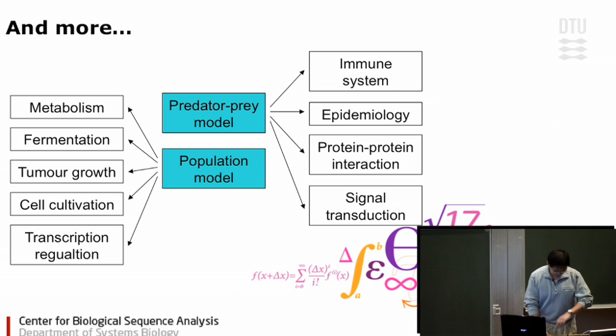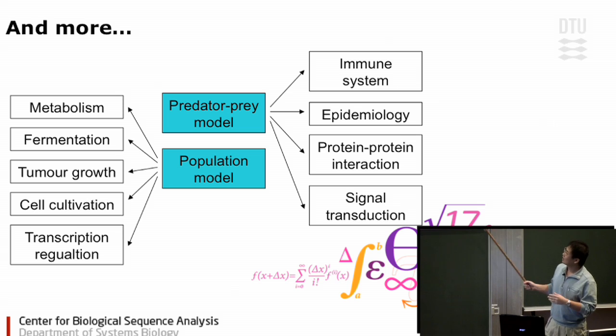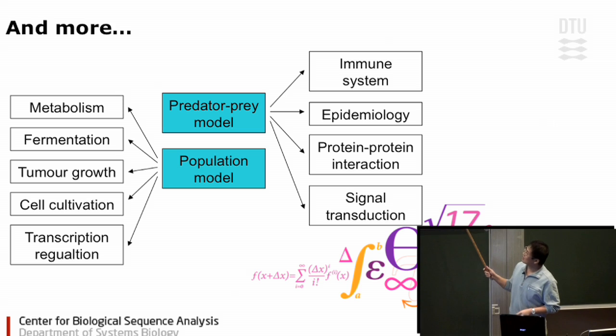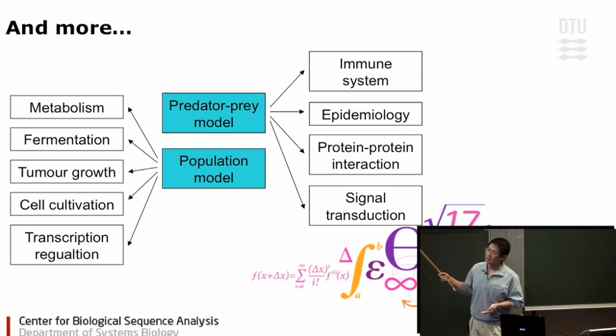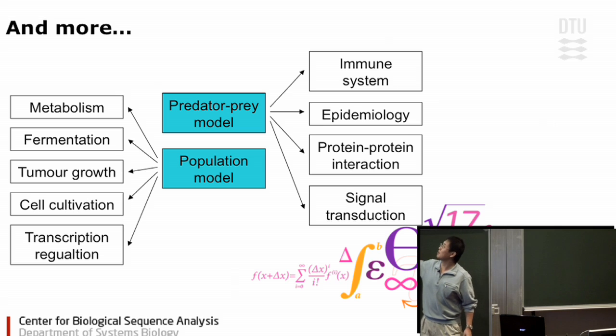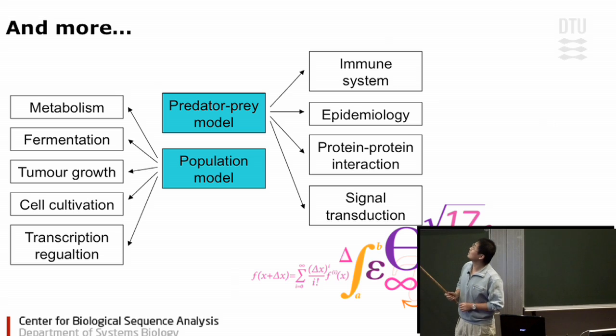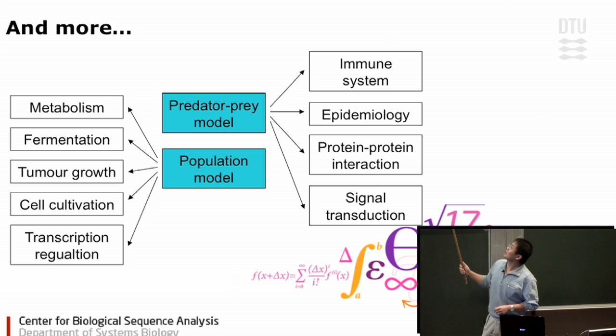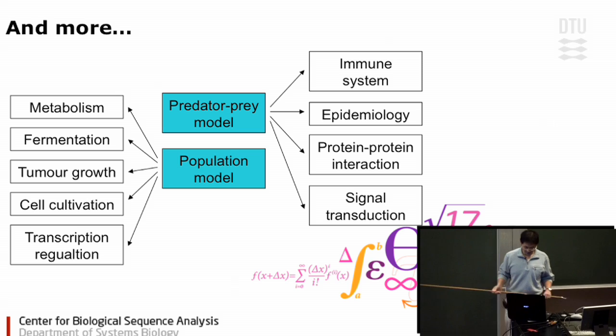I think I'm running out of my time, but I would want you to know that even with those simple models, there is still a lot of fields in biological study that these functions can contribute to positively. For example, the population model can be used in study of metabolism, fermentation, tumor growth, cell cultivation, transcription regulation, and the predator-prey model can be used in study of the immune system, epidemiology, protein-protein interaction, and signal transduction. And some fields even I don't know.